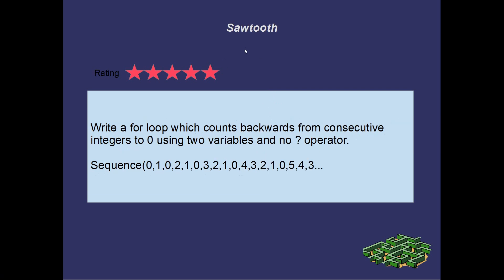Alrighty, another 5-star problem. Another hard one. This one I've called the sawtooth. I want you to write a for-loop which counts backwards from consecutive integers to 0, using two variables and no question mark operator. So you start at 0, then you go 1, 0, then 2, 1, 0, 3, 2, 1, 0, 4, 3, 2, 1, 0, 5, 4, 3, 2, 1, 0, etc, etc. So you keep counting back down to 0 from higher and higher integers each time. Give it a shot. Yeah, it's pretty hard.